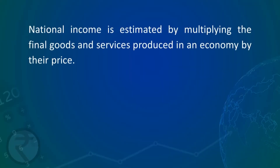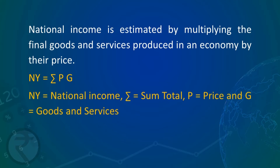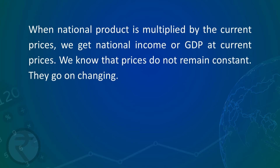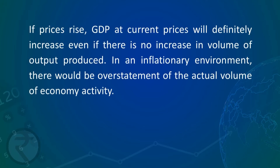National income is estimated by multiplying the final goods and services produced in an economy by their price. So national income equals output multiplied by price — it is the sum total of P (price) and G (goods and services). When national product is multiplied by current prices, we get national income or GDP at current prices. We know that prices do not remain constant; they go on changing. If prices rise, GDP at current prices will definitely increase even if there is no increase in the volume of output produced.